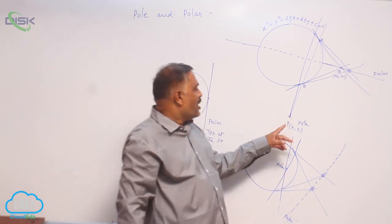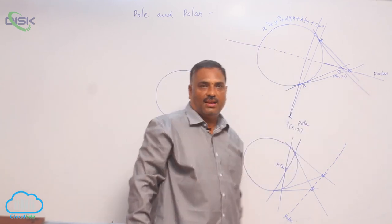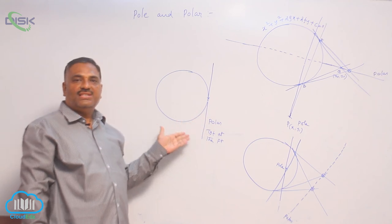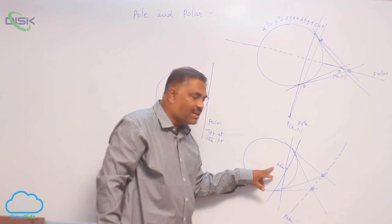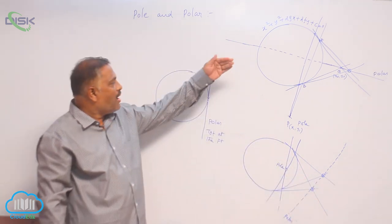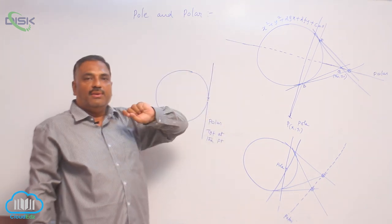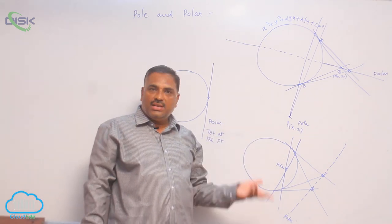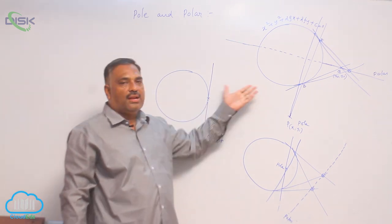When the point lies outside, polar is intersecting the circle. When the point lies on the circle, it coincides with the tangent at that point. When the point lies inside the circle, polar lies outside the circle. So, in all the three cases, polar exists. Position of the point, we already discussed: S11 greater than 0, equal to 0, less than 0. In all these three cases, polar exists.